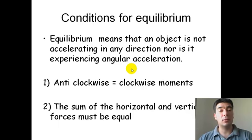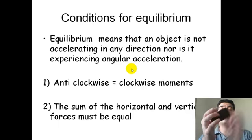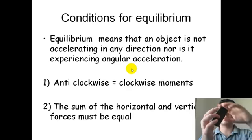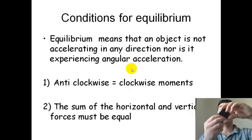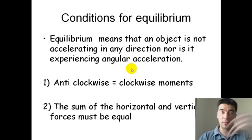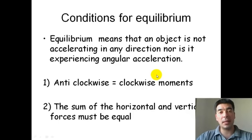It is also not experiencing any angular acceleration, which means that the thing could be turning at a constant speed, but it's not getting faster and faster and faster. So it's not accelerating angularly. So for that to be the case, we must meet these two conditions. Firstly, the anticlockwise moments must be equal to the clockwise moments. That is exactly the same as what we just saw with the donkey example. And that the sum of the horizontal and the vertical forces are equal.